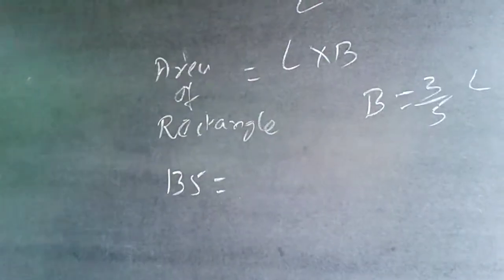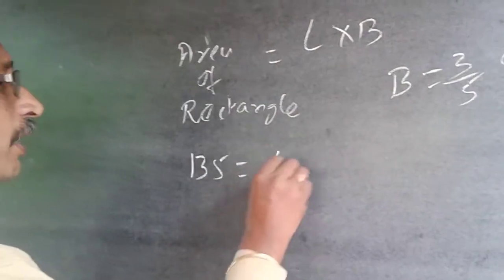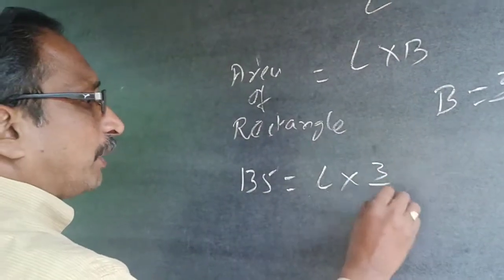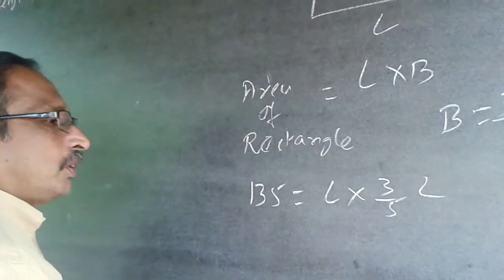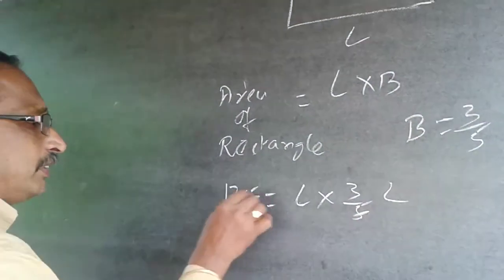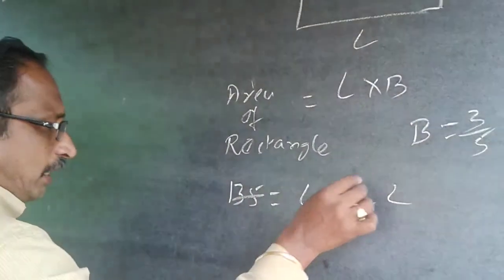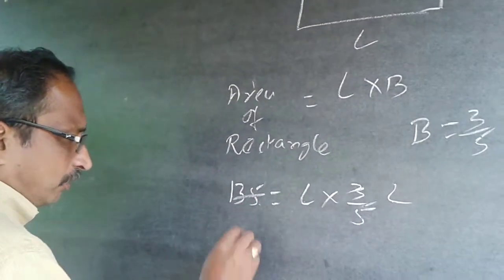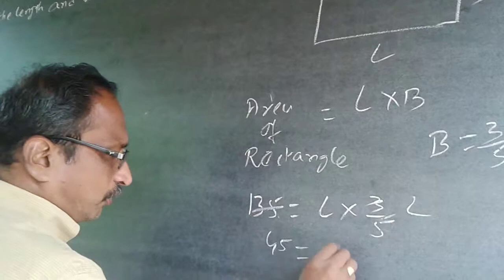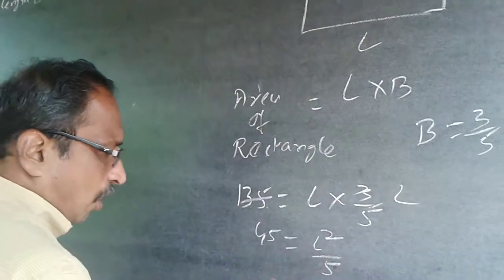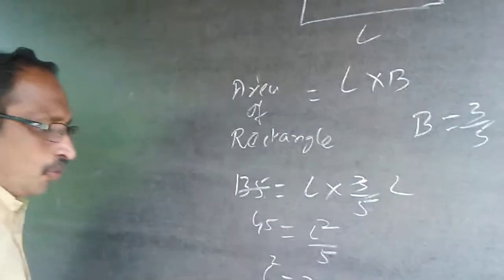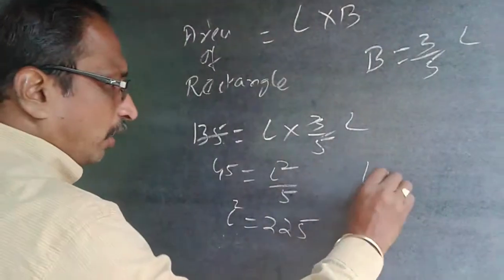135 will be equal to L into breadth, which is becoming (3/5)L. So 135 = L × (3/5)L. The three and 135 cancel to give 45 = L² / 5, so L² will be equal to 225.